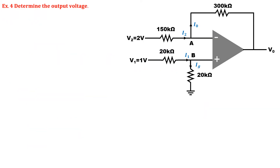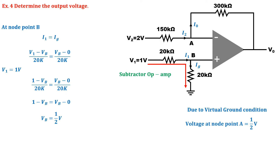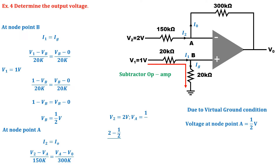In exercise number 4, voltage is applied on both terminals. Such an operational amplifier is called a subtractor operational amplifier. First, pay attention to node point B. Due to input voltage V1, current flows through node point B to the ground. Doing node analysis for node point B gives I1 equals Ig, where I1 is V1 minus Vb upon 20 kΩ and Ig is Vb minus 0 upon 20 kΩ. Solving this gives a potential of half a volt at node B. Due to virtual ground, this potential also appears at node A. Then node analysis for node A gives I2 equals I0, where I2 is V2 minus Va upon 150 kΩ and I0 is Va minus Vo upon 300 kΩ. Solving this gives the output voltage as –2.5 V.